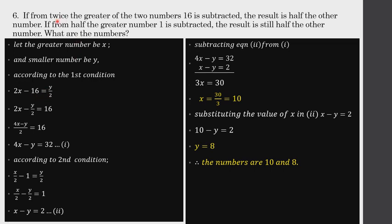From twice the greater number x, if 16 is subtracted, we get 2x minus 16, which equals half the other number, that is y by 2. Rearranging this equation — taking y by 2 to this side — gives us 4x minus y equals 32. This is what the first condition states.